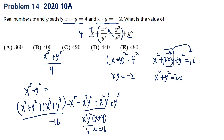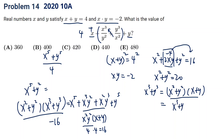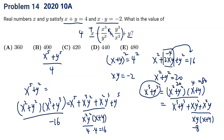We also need x cubed plus y cubed. Using (x squared plus y squared) times (x plus y), expanding gives x³ plus y³ plus x²y plus xy² which equals xy times (x plus y), so that's negative 2 times 4 equals negative 8. So x³ plus y³ equals 20 times 4 equals 80, meaning x³ plus y³ equals 88.